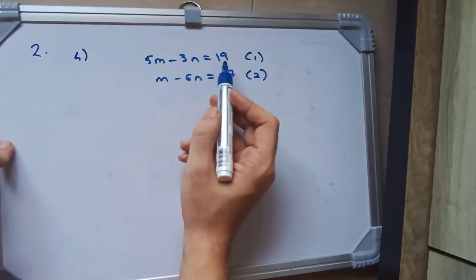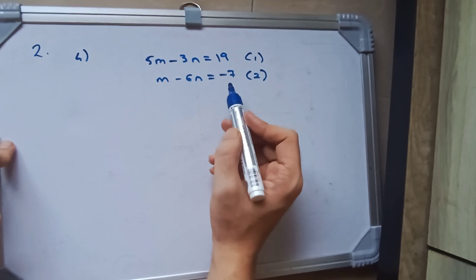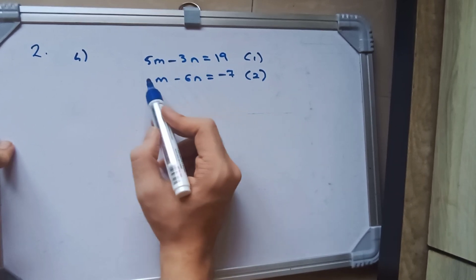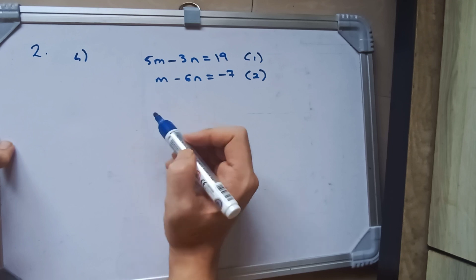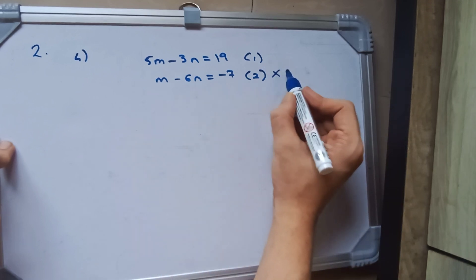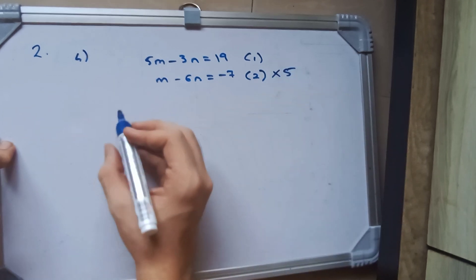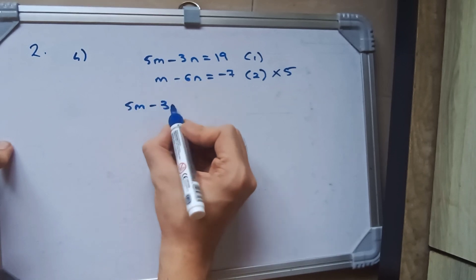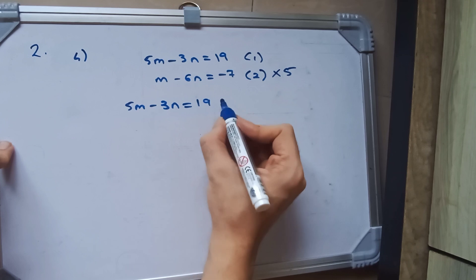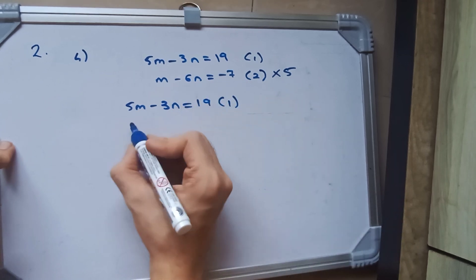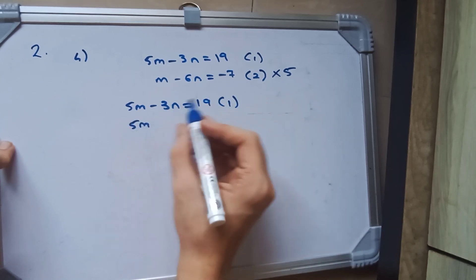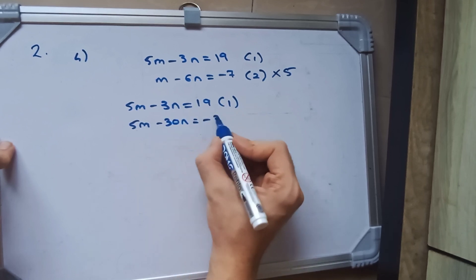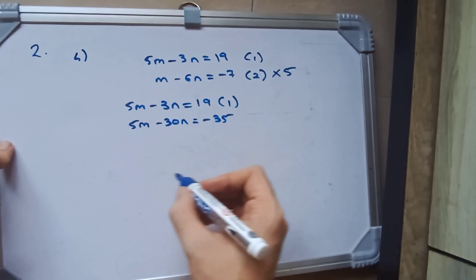So in our next sum, we have 5m minus 3n is equal to 19, and m minus 6n is equal to minus 7. You can see if we multiply 5 right here, then we could easily cancel it out — multiply the entire thing by 5. So we will get 5m minus 3n which is equal to 19 as it is for the first equation. For our second equation, we will multiply by 5. 6 into 5 is 30.